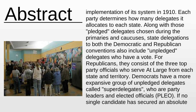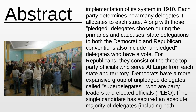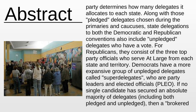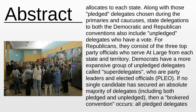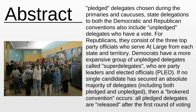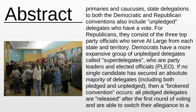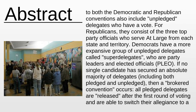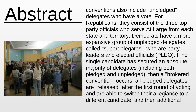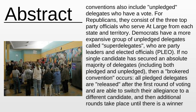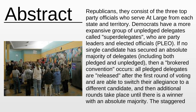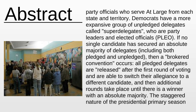Each party determines how many delegates it allocates to each state. Along with those pledged delegates chosen during the primaries and caucuses, state delegations to both the Democratic and Republican conventions also include unpledged delegates who have a vote. For Republicans, they consist of the three top party officials who serve at large from each state and territory.